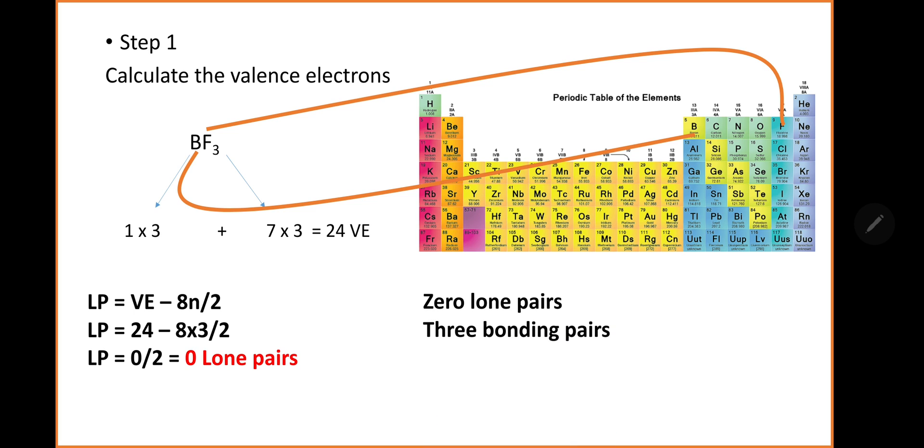If this was to follow the octet rule, we should have 4 bonding pairs, but we only have 3. Here's where I introduce something new.